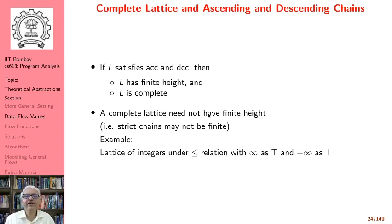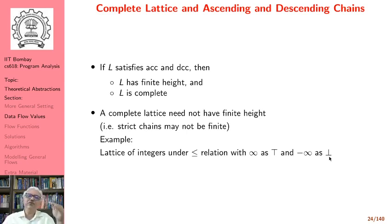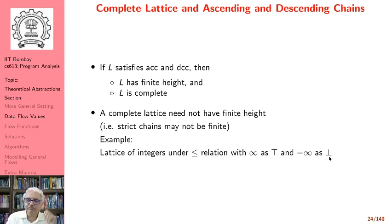A complete lattice L need not have a finite height — that is, all strict chains may not be finite. For example, the lattice of integers under the less-than-or-equal-to relation, with positive infinity as top and minus infinity as bottom, is a complete lattice where strict chains may not be finite. Starting from some element and taking a descending chain, it goes all the way to minus infinity and this chain is not finite. Note that infinity and minus infinity are not numbers; they are just approximations, not specific numbers representing a specific count.